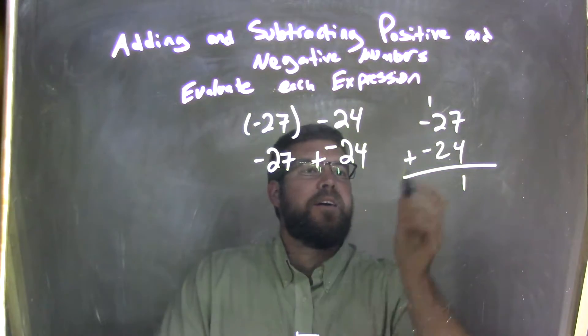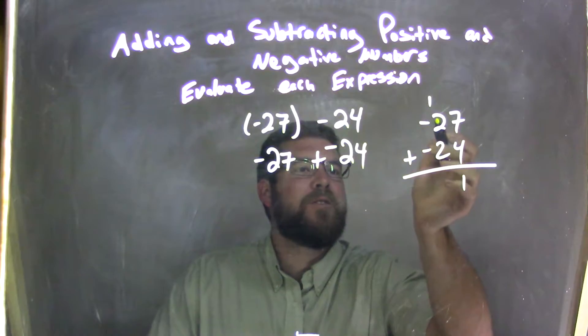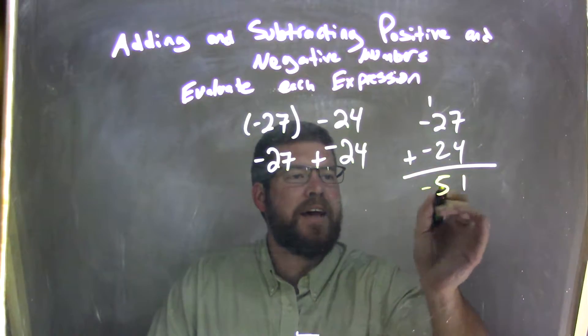And this is negative 1, right? Well, 2, 2, 1, add them together is 5, and we have a negative 51.